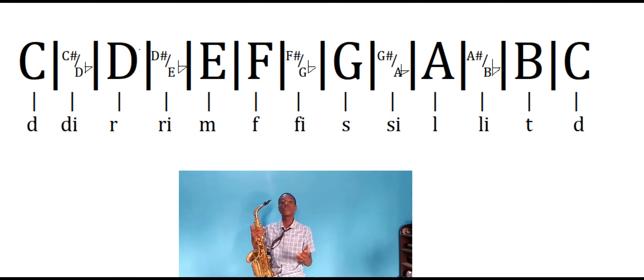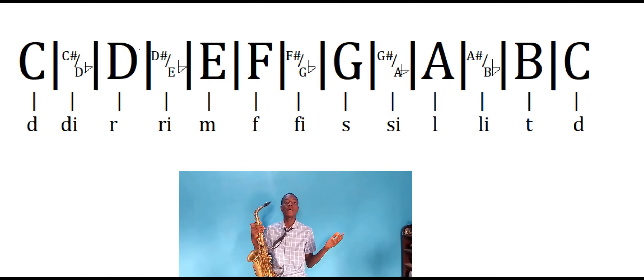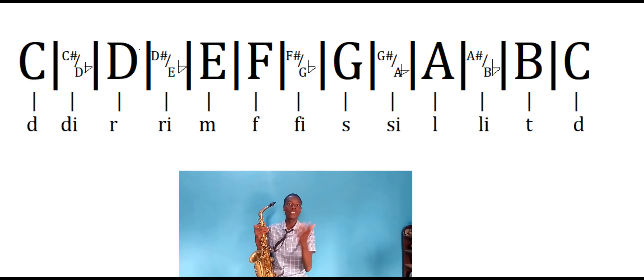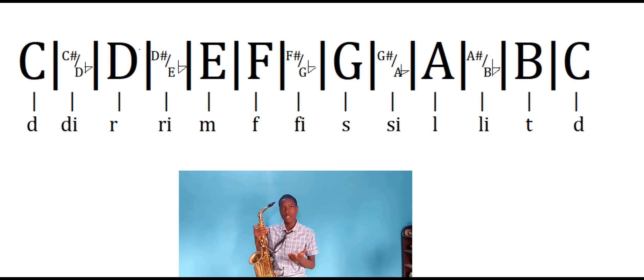C is your DO, D is your RE, E is your MI, F is your FA, G is your SO, A is your LA, B is your TI, and the upper C is your DO. Remember, no accidentals. So let's go to another key — let's give it key C-sharp or D-flat.